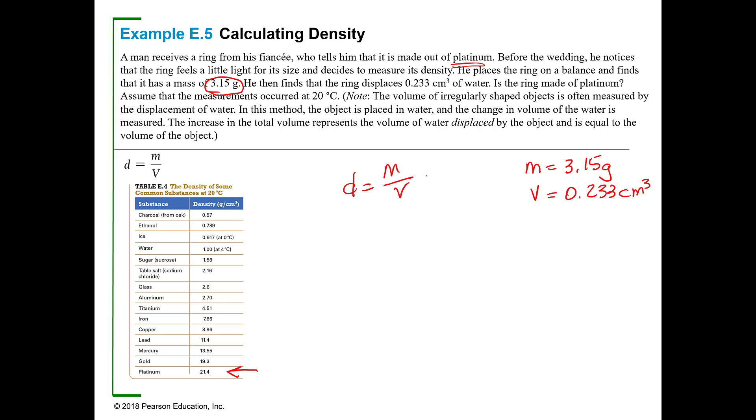If I want to know what the density of this is, I know density is mass over volume, so the density would be 3.15 grams divided by 0.233 cubic centimeters. If I do that math, I'm going to see that it's 13.5 grams per cubic centimeter. That ain't 21.4, so somebody got ripped off because the density of that ring was only 13.5 and it should have been 21.4. Somebody mixed some cheap metal in there.